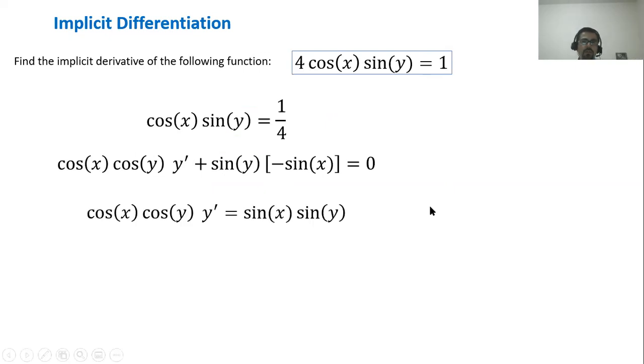Now what we have to do is we have to clear for y prime. We have to solve for y prime. And what we do is we add sine x, sine y on both sides. Some people say we move it to the other side. Just do your algebra and you're going to have this. Cosine x times cosine y times y prime is equal to sine x, sine y. You can see it was negative here, product of sine x, sine y was negative, and you write it positive on the other side.